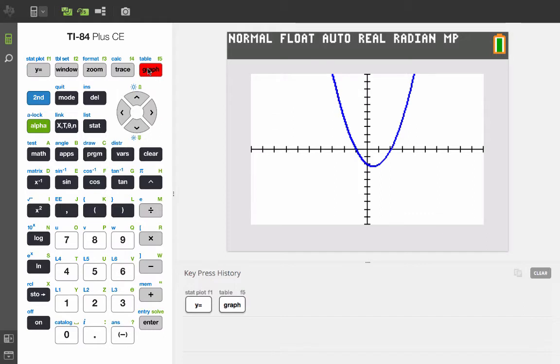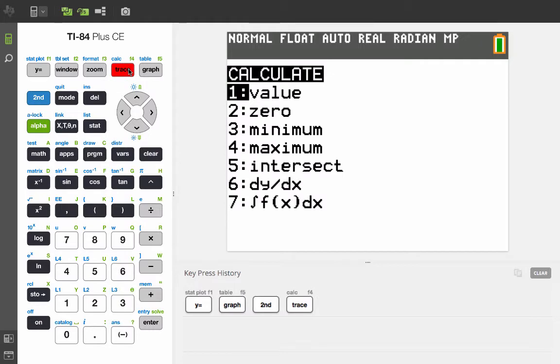You'll notice that there are two zeros, and here's how we're going to find them. We're going to use the calc function again, so we're going to press second, calc. And this time we're going to look for zero, so we're going to select number two.